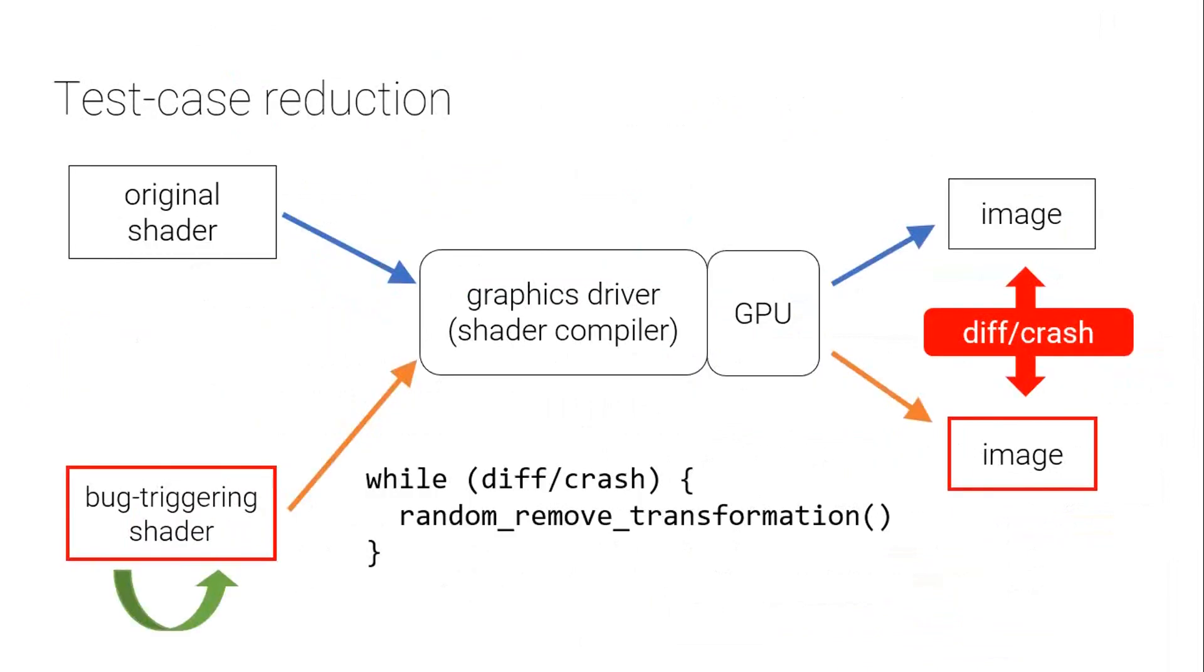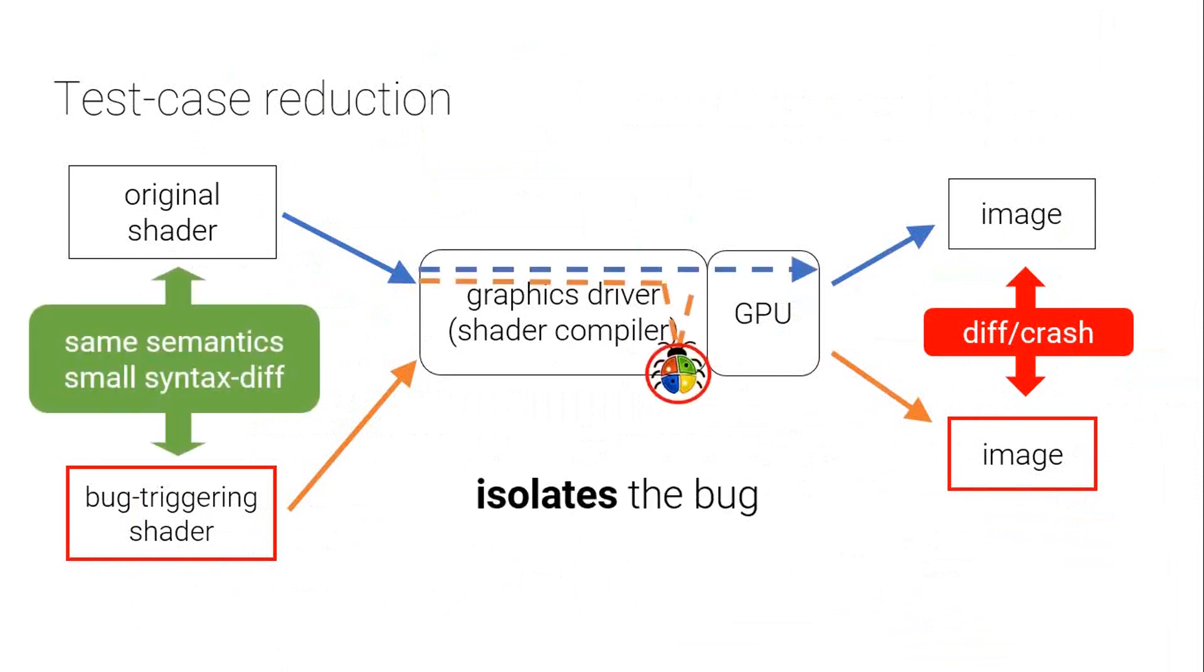So this really isn't very useful on its own. What we also need is test case reduction. What we've done is we've made a variant shader that triggered a bug by applying a load of transformations to an original shader. And luckily, because we applied the transformations, we know what they are, and we know how to undo them. So what we can do is we can iteratively remove transformations using a kind of guided random search. I think of it being a little bit like binary search in the sense that you go greedy and you try and have exponential decay in how quickly you converge to a result. So you do this iterative search, removing transformations, while there's a diff or a crash. Every time you get the right result, you put back the transformations you undid and you undo some different ones. And you converge on a very small diff from the original shader that preserves semantics, but gives a different result, gives a bug. And this provides for a developer of the compiler a path through the graphics driver and compiler that deviates from the reference path in a way that should give a good head start in how to debug the problem.